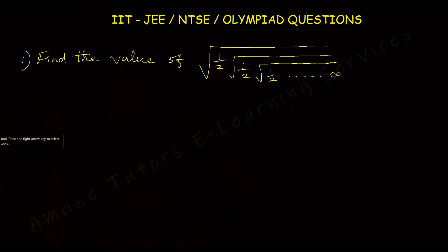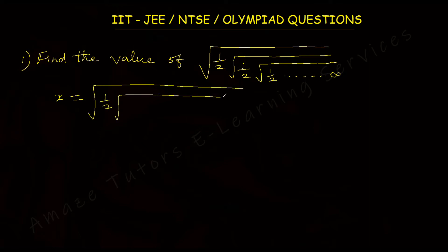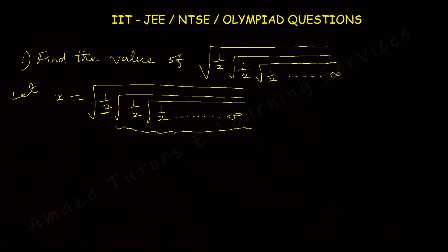Using a technique: I'm going to take x as the given surd — square root of 1/2 times square root of 1/2 times square root of 1/2, with multiple nested surds. Let x equal this expression. Now, leaving this first 1/2, if I consider from the second term until infinity, that is also x, because I have already defined x as this infinite nested surd. So from the second 1/2 onwards till infinity, it is equal to x.